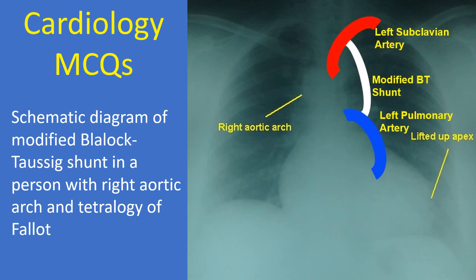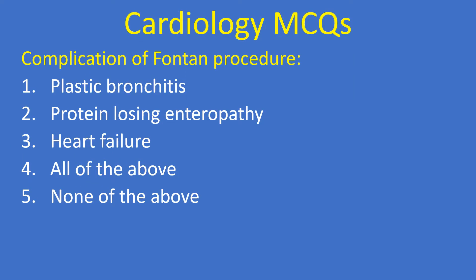Schematic diagram of modified Blalock-Taussig Shunt in a person with right aortic arch and tetralogy of Fallot. Question: Complications of Fontan procedure. Option 1: plastic bronchitis. Option 2: protein-losing enteropathy. Option 3: heart failure. Option 4: all of the above. Option 5: none of the above. Correct answer: 4, all of the above.